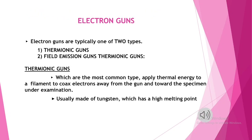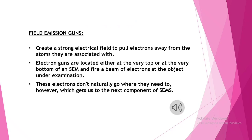The electron gun is one of the major parts of a SEM. It is mainly classified into thermionic emission and field emission. In thermionic emission, the metal is heated to a sufficient temperature to enable free electrons to come out of its surface. In field emission, a very strong electric field is applied to the metal, which pulls the electrons out of the surface due to the attraction of the positive field.